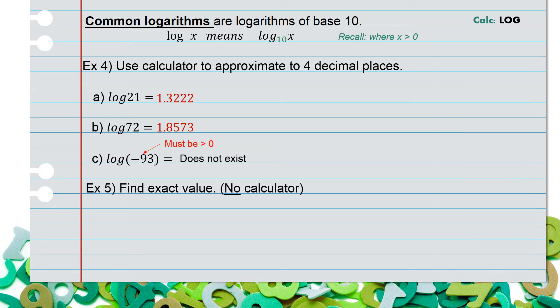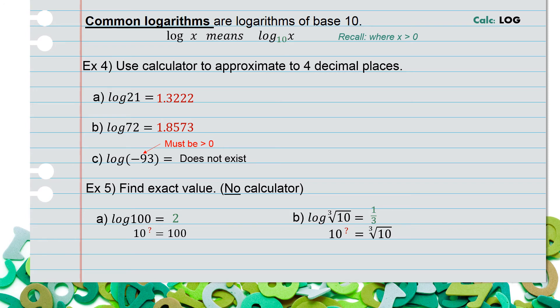Example 5: find the exact value with no calculator. For part a, we have log of 100. Do you see a base? No, so we interpret that as 10 raised to some power equals 100. The power would be 2. Next, we take a log of the cube root of 10. Again, no base, so we interpret it as 10 raised to some power equals the cube root of 10. That would be one-third.